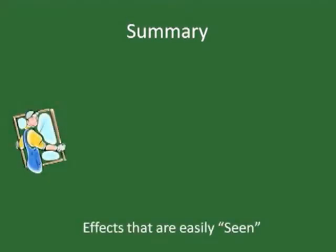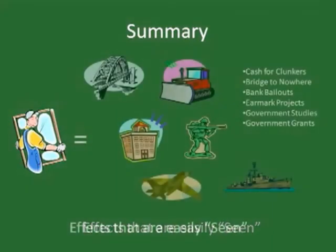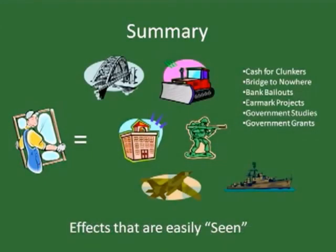We can summarize by reintroducing the various players in our broken window story and identify the corresponding components in the real world application. First, we have the glazier. He was the innocent beneficiary of the action. But what if he paid the vandal to break the window? In the real world, he can be any of the countless beneficiaries of government spending.